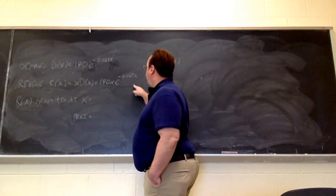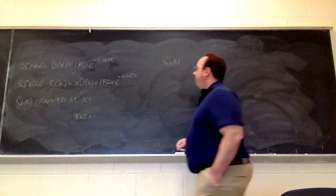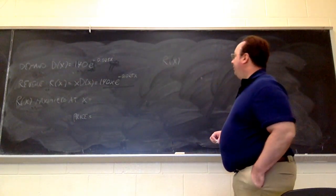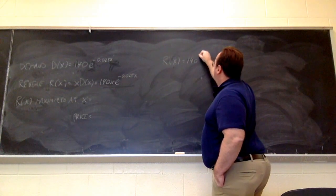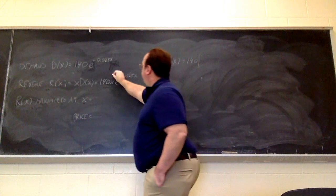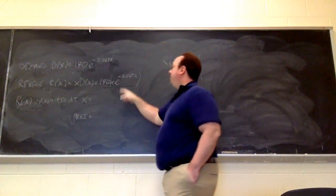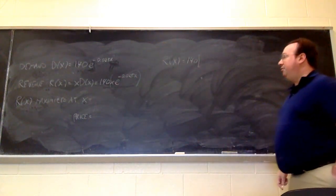And that will give us the value of x that we seek. So, this function is a product, so we have to use the product rule. So, I'm going to have 140 out front, and now let's differentiate x times, or put parentheses here, x times e to the minus 0.025x.